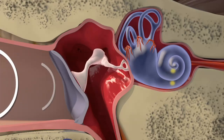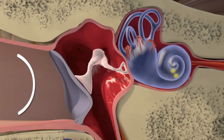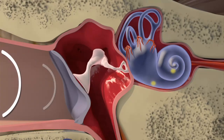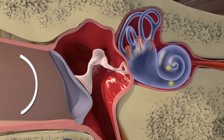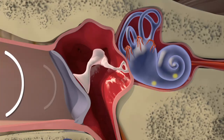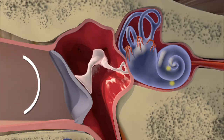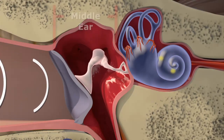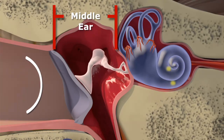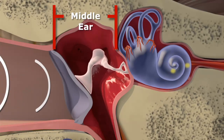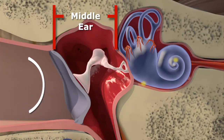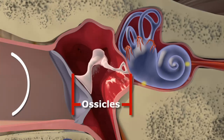Sound travels as a wave into the auditory canal. The eardrum converts the wave into mechanical energy that passes through the middle ear. In the middle ear there are three small interconnected but moveable bones called the ossicles.